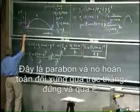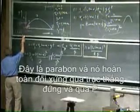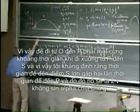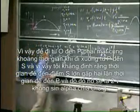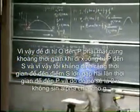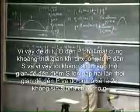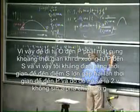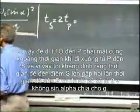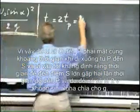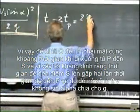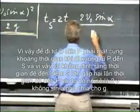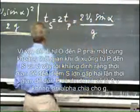This is a parabola, so it's completely symmetric about the vertical axis at point P. To climb up from O to P must take the same amount of time as to go down from P to S. Therefore, the time to reach point S must be twice the time to reach point P, and so it's going to be 2V₀ sinα divided by G.